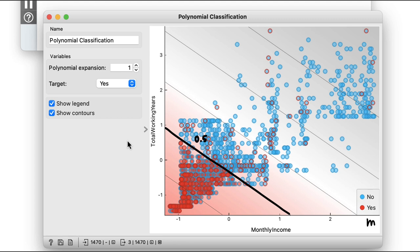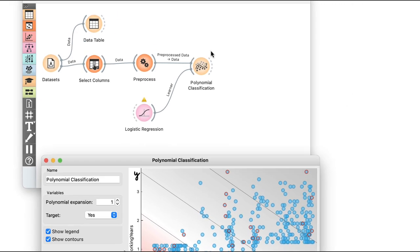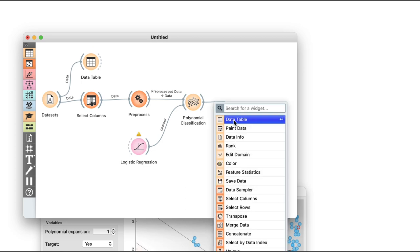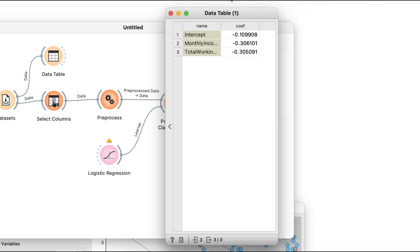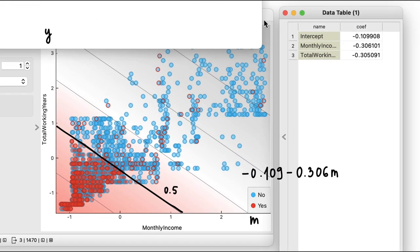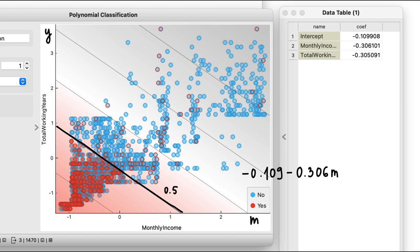Now just a bit of math. Let m denote the monthly income and y the total working years. In two dimensions, the equation for a line is just the weighted sum of features m and y, plus some intercept. Call it w0. Now in order to parametrize the decision boundary, we just need to find the proper weights. I can find these weights in a data table. Now I'll rewrite my equation as minus 0.109 minus 0.306 times m minus 0.305 times y equals 0.